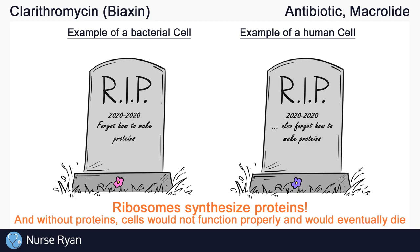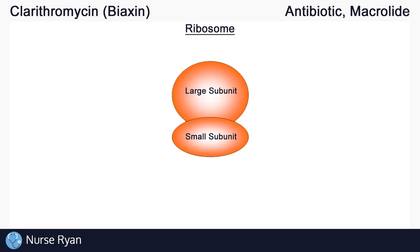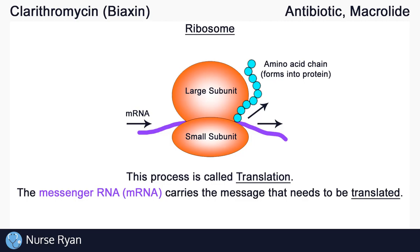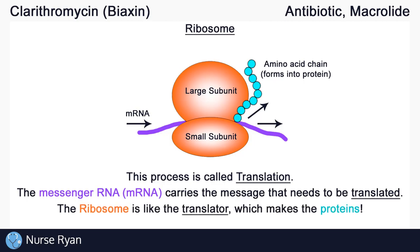All ribosomes are made up of subunits. You can imagine we've just zoomed in on a ribosome here. Each ribosome has a large subunit and a small subunit that are both required to synthesize proteins. These subunits work together to first read information that comes in on messenger RNA, or mRNA. Then the subunits use that information to create amino acid chains, which eventually form into proteins. The subunits of ribosomes read instructions from mRNA and produce amino acids — this process is called translation. You can think of messenger RNA as the message that needs to be translated, and the ribosome is like the translator, which takes that message and uses it to make proteins.